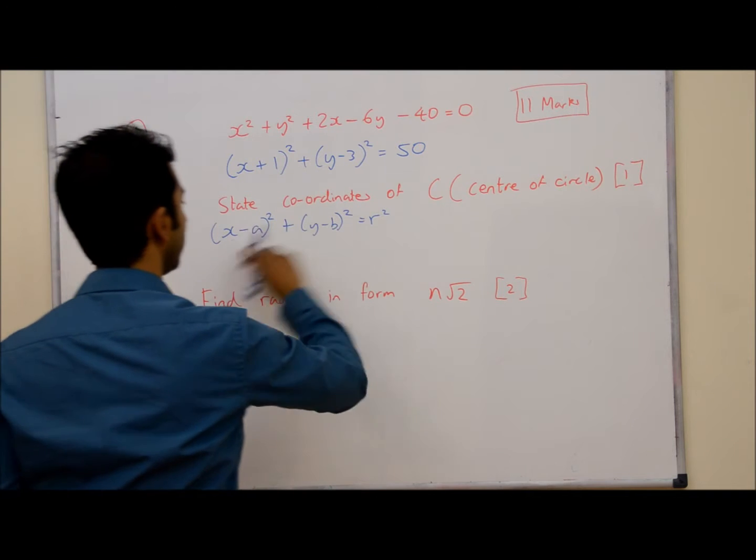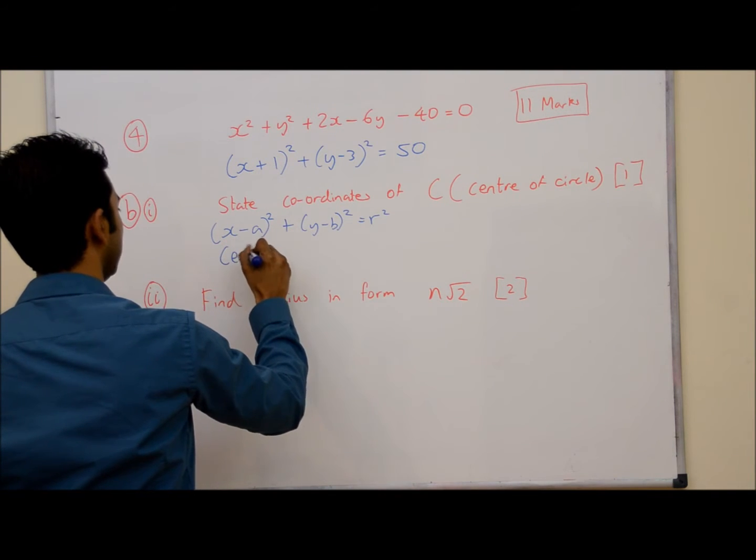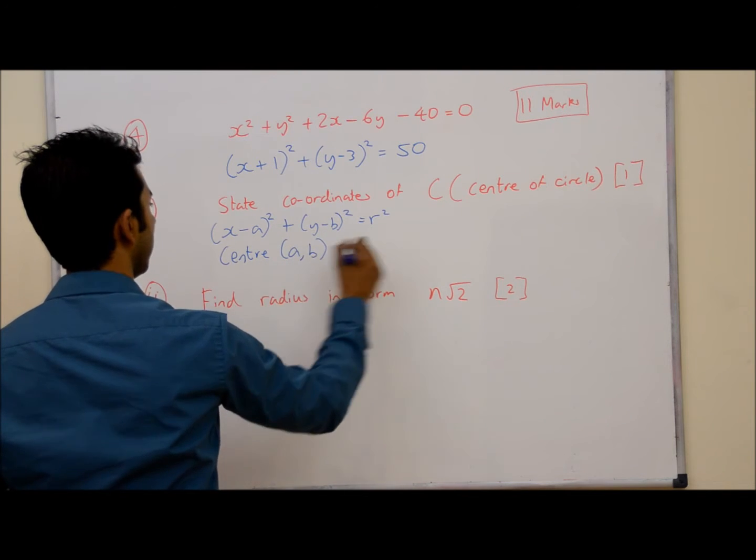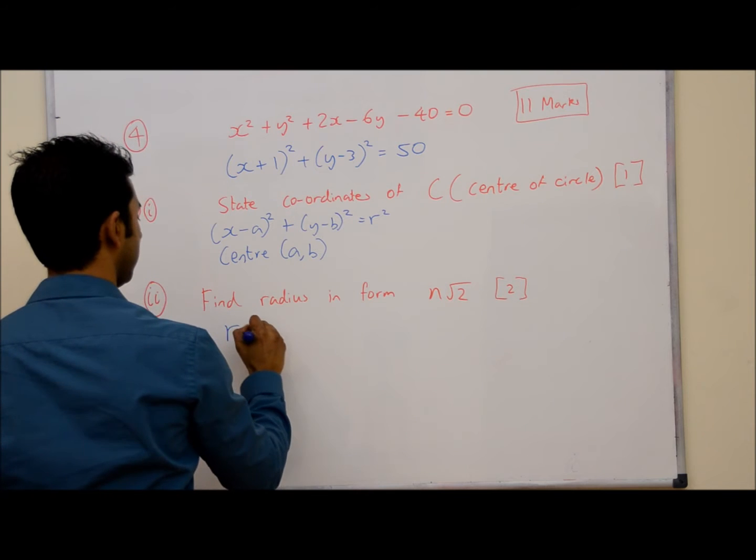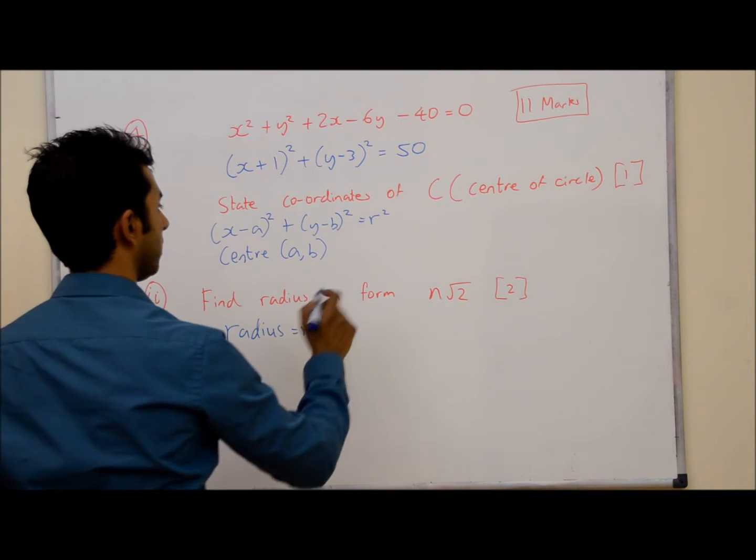Now, if your equation of a circle is written in this form, the centre of the circle will be the coordinates (a,b) and the radius will be r. I'll write that here because we're going to need that for the next part of the question.